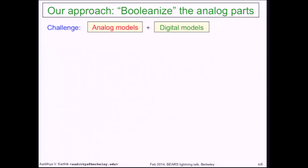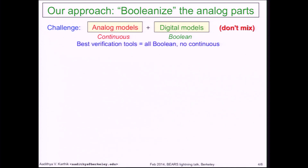The challenge we have for verification is that we have one set of models for the analog parts of the chip and another set of models for the digital parts. The analog parts are usually modeled as continuous systems — systems of differential equations and algebraic equations, essentially continuous math. Digital models are things like truth tables, AND inverter graphs, and binary decision diagrams — all discrete math. The problem is that these two models don't mix well together, because the most capable and powerful verification tools we have today only accept Boolean models and do not deal with continuous models. That is where my work comes in.